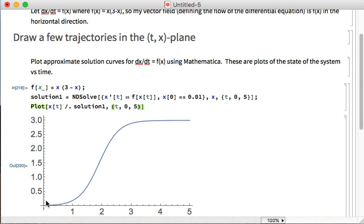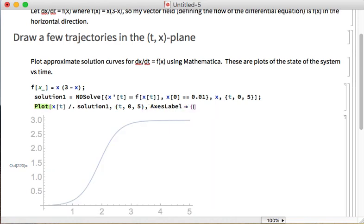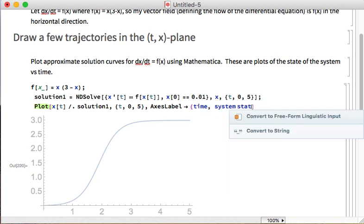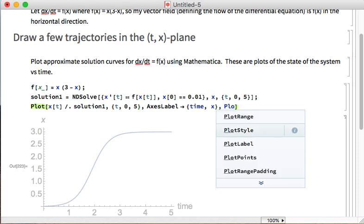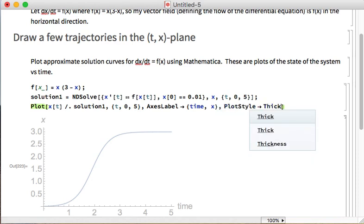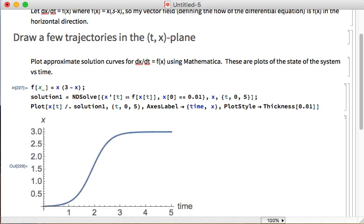If I were to start at 0.01 and run this model forward in time, I approach 3 after a relatively short time. And then let me add some axis labels. I'm just going to call it x. And let me make the line a little thicker. Way too thick. Great.